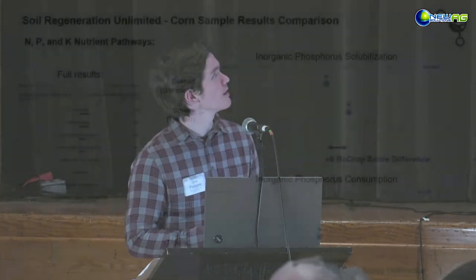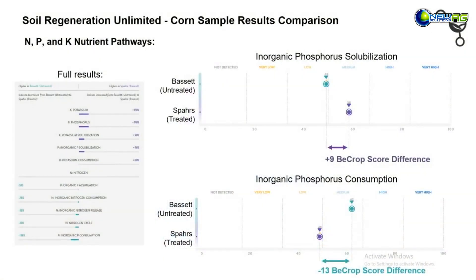Looking at the nutrient pathways, P and K is where we really saw a difference. The overall P and K pathways went up, and looking at the supply pathways specifically, inorganic phosphorus solubilization and potassium solubilization both went up nine points. For many microbes, solubilization works such that they don't all solubilize both P and K — they might do one or the other.